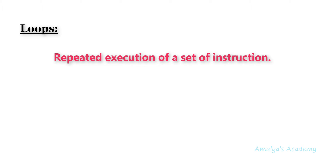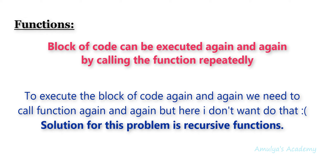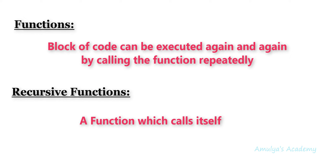We want something that will execute part of code again and again for different values. When I think about this, the first thing that comes to my mind is functions. A function allows us to execute part of code again and again — by just calling that function we can execute the body again and again. But here I don't want to call the function again and again. If the function calls itself, that is the best alternative for loops here. A function that calls itself is called a recursive function. So the alternative way for loops here is a recursive function.